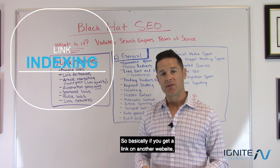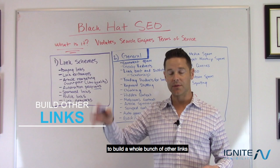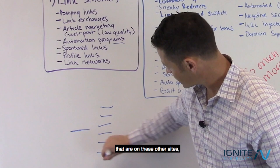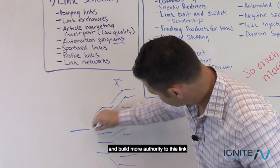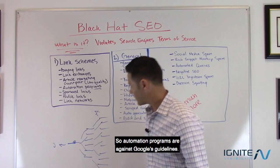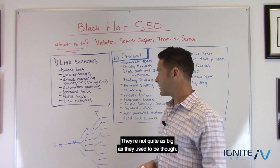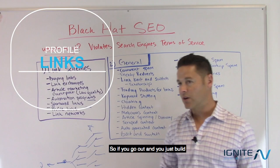Anything that's automated is bad. There are programs that do something called link indexing — if you get a link on another website, there's a chance Google might not even see it. So these automation programs build a whole bunch of other links to those links, which then go to that final link, building more authority to the link pointing to your site. Automation programs are against Google's guidelines, and there are quite a few of them out there, though they're not quite as big as they used to be.